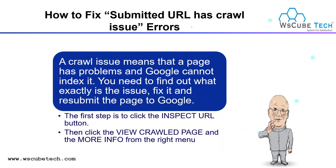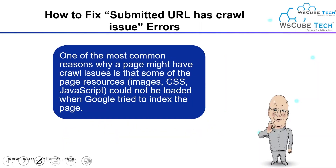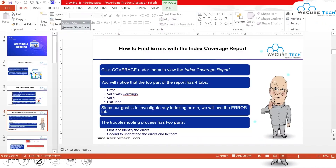Let's resolve the issues. How to fix submitted URL has a crawl issue: A crawl issue means that a page has a problem and Google cannot index it. You need to find out what exactly the issue is, fix it, and resubmit the page. For this, we simply visit the inspect URL button, then view crawler page, and then get more detail. Let me explain practically.